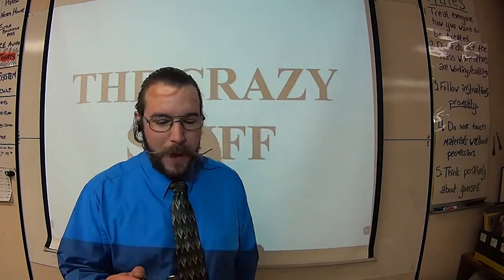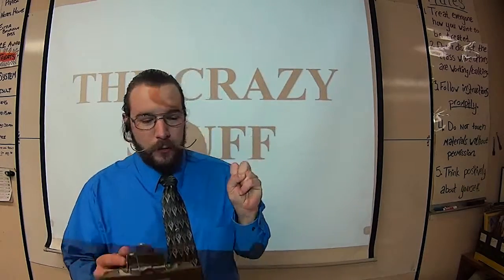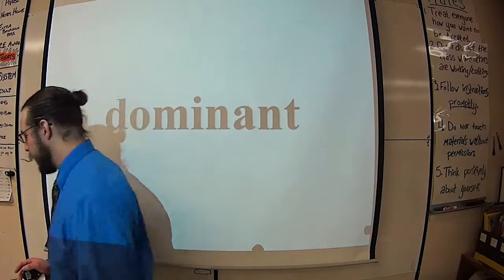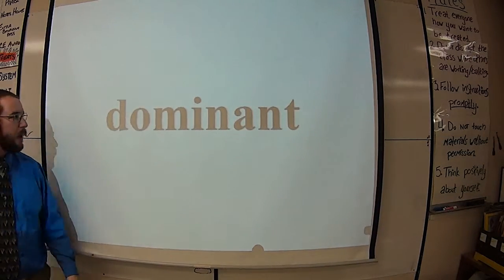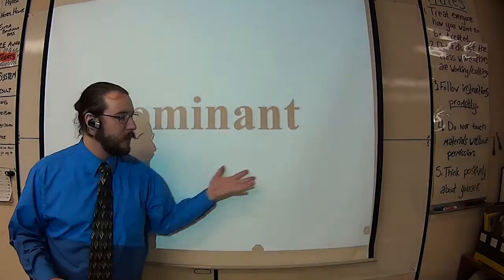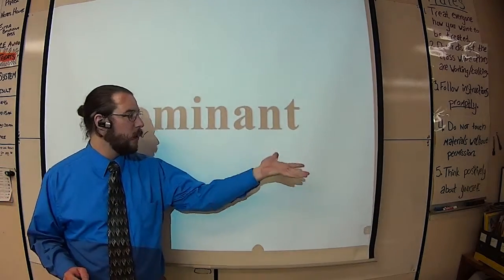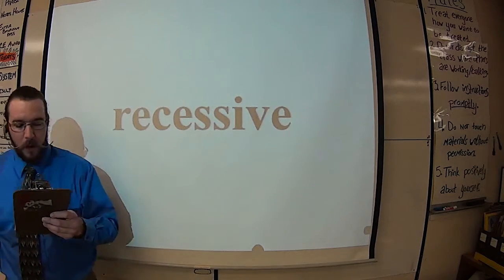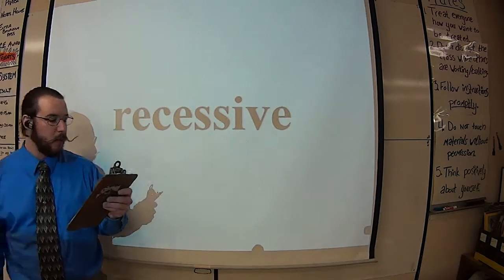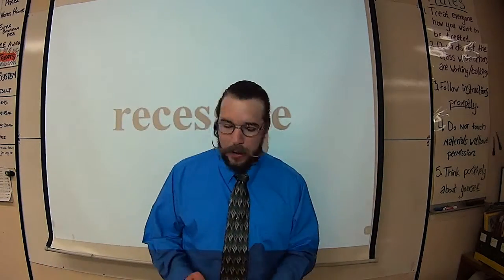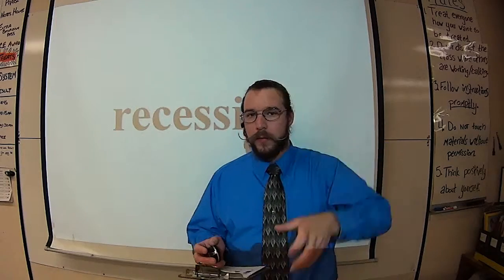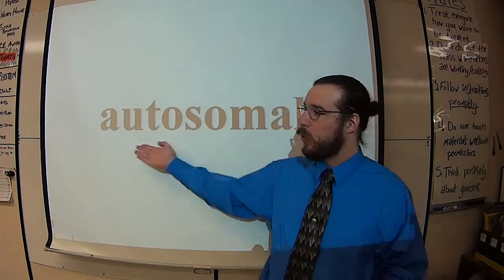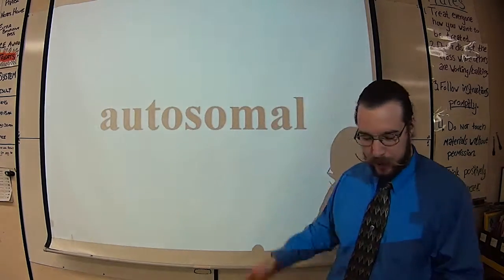There's two main patterns for inheritance for all normal traits. That would be, yes, dominant. And if there is dominant, then there's probably also recessive. Yes, recessive. All traits inherited this way are called Mendelian, but because they're on normal chromosomes, they're also called autosomal traits.